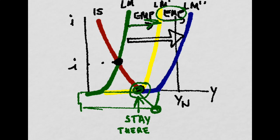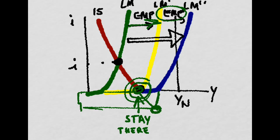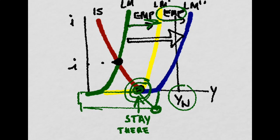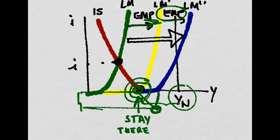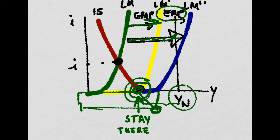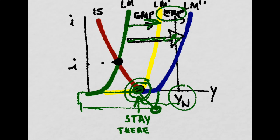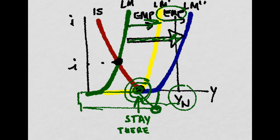And if that happens, then your output is here, and your potential output is here, and it falls short. So an expansionary monetary policy would not be able to make your economy reach the potential output again when you get into a liquidity trap.